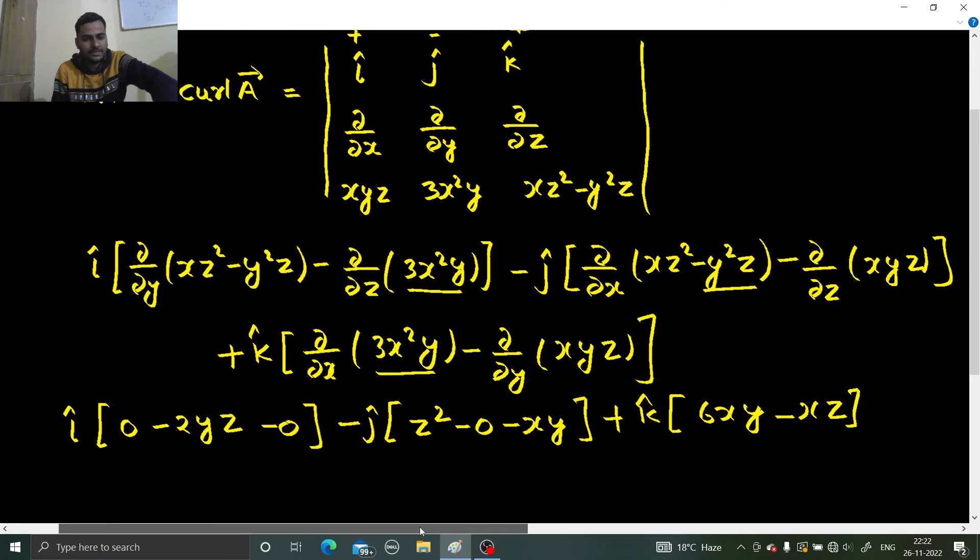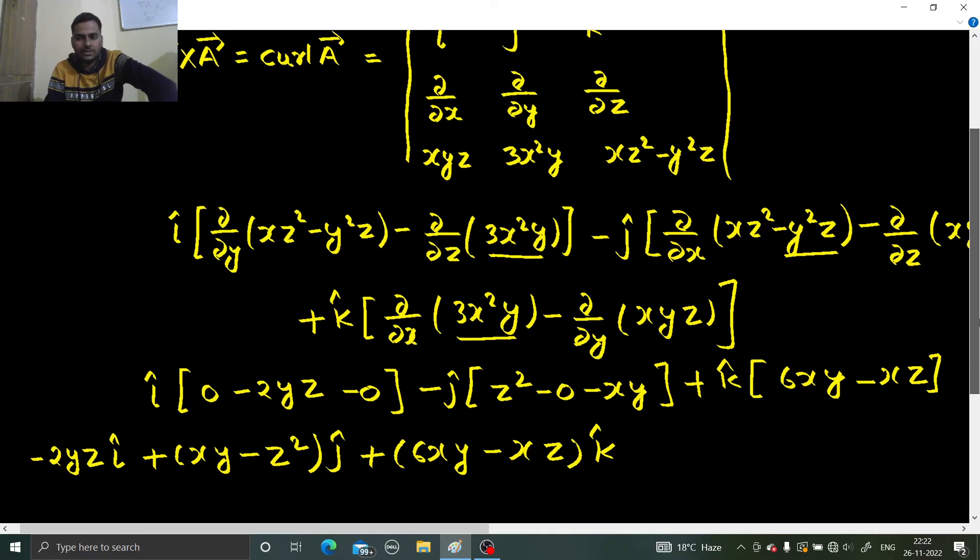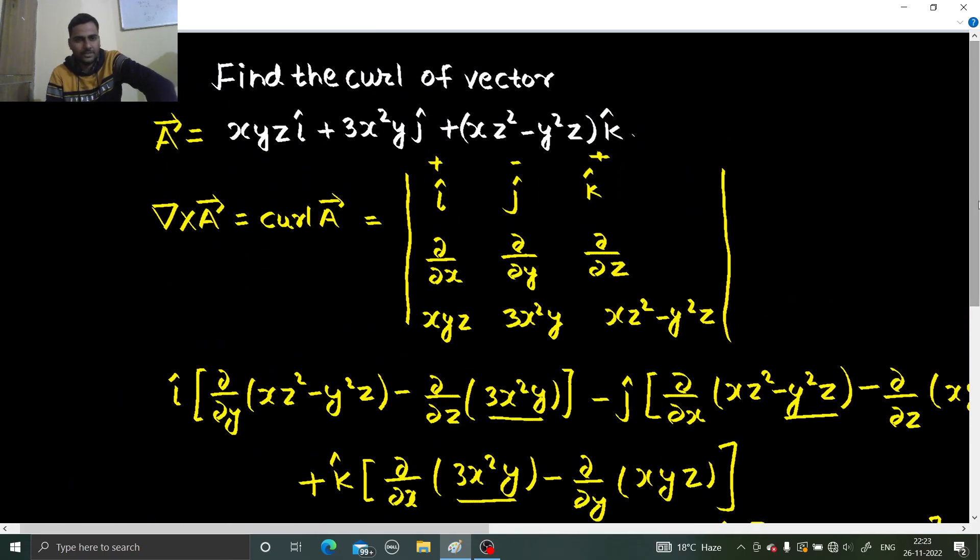Let's make some adjustments. With i, you have minus 2yz, so you can write this as minus 2yz i. Minus (z² minus xy) times minus j gives (xy minus z²) j. With k you have 6xy minus xz. This is your curl of vector R.